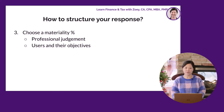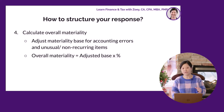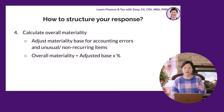Once you have chosen a base, you should choose a materiality percentage based on professional judgment and the user's objectives. For example, it may be 5% of normalized income before tax. Don't forget to adjust materiality for accounting errors and any unusual or non-recurring items prior to calculating the overall materiality.